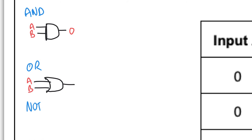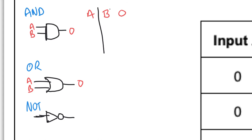Truth tables: for AND and OR gates, you have columns A, B, and output O, describing all combinations: 0,0 then 0,1 then 1,0 then 1,1. For an AND gate, output is only 1 when both inputs are 1 — all other combinations give 0. For an OR gate, output is 0 only when both inputs are 0 — all other combinations give 1.